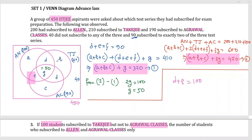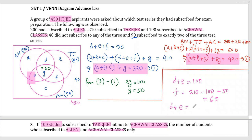From d plus b equals 100, I can calculate using TakeG total: 210 minus 100 minus g (50) gives e plus f... wait — from TakeG: 210 minus (d plus b) minus g is 210 minus 100 minus 50 equals 60, so f equals 60. Then d plus e equals 90 minus 60, which gives d plus e equals 30.